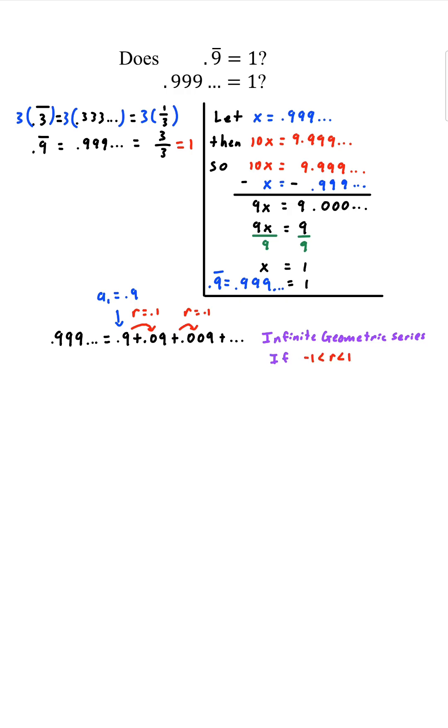And it states that if the common ratio is between -1 and 1, and 0.1 is between those two numbers, then the infinite sum is the first term divided by 1 minus the common ratio. So we'll apply this.